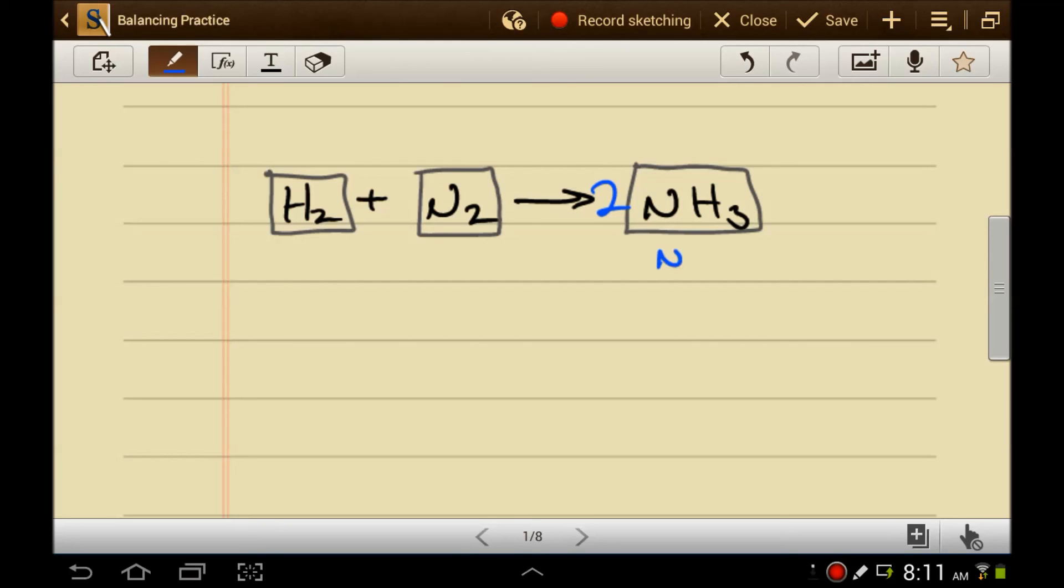Unfortunately, that gives us 6 hydrogens. So, if we want to have 6 hydrogens on this side, how many H2's do we need in order to have 6 hydrogens? We need 3. This equation is now balanced, it obeys the law of conservation of mass, and we haven't changed any of the subscripts in order to balance the reaction.